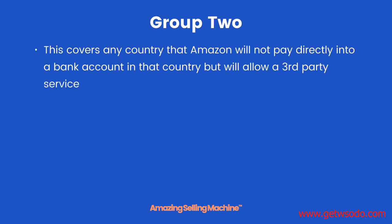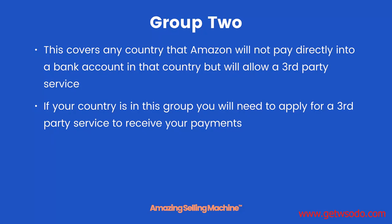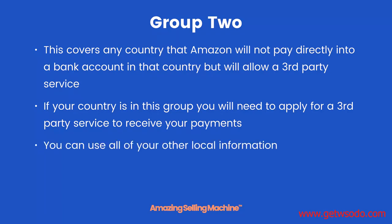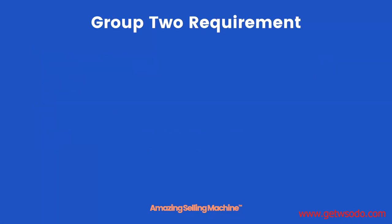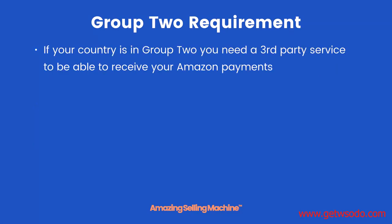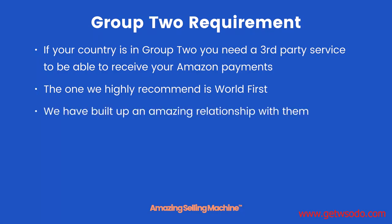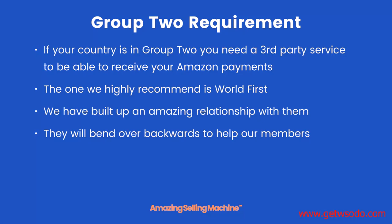Group two covers any country that Amazon will not pay directly into a bank account in that country, but will allow a third-party service. If your country is in this group, you will need to apply for a third-party service to receive your payments — we'll cover that later in this lesson and in the next lesson. Apart from your bank account, you can use all of your other local information. The third-party service we highly recommend is World First — we have built up an amazing relationship with them over the last four years.